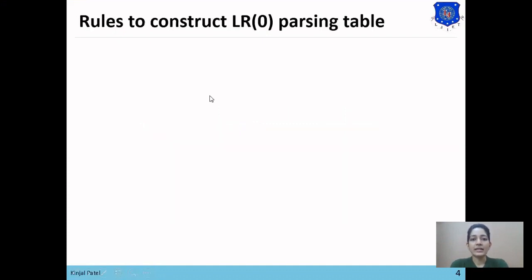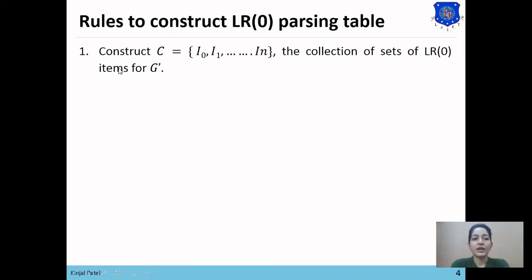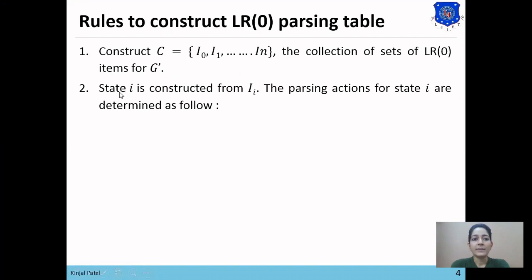The rules to construct the LR0 parsing table: first rule is to construct the canonical set of LR0 items for grammar G'. We have already created item sets I0 to I6 for the given grammar. The second step is to construct a state I from each item set — if there are item sets I0 to Im, then construct states 0 to N. The parsing actions for state I are determined as follows.